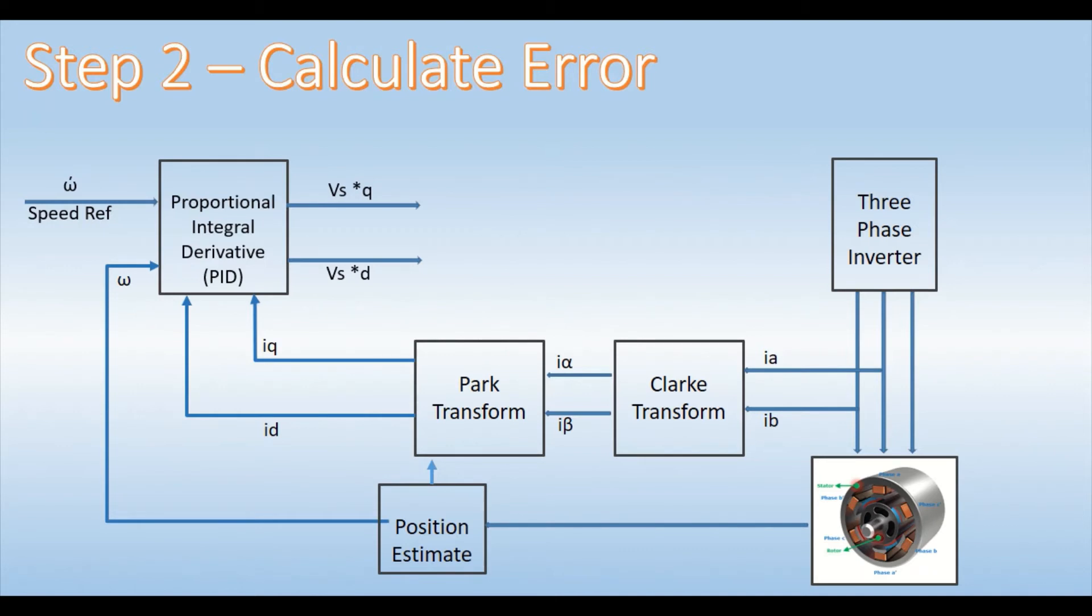In the context of an EV, the PID block will receive a speed reference when the driver operates the throttle. The PID block now compares the two values and calculates the error. This error is the value for which the PID block has to rotate the motor. The output that the PID block gives is VQ and VD.